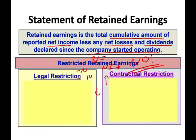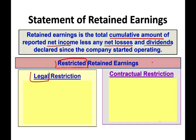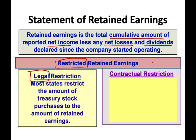Retained earnings could also be restricted. What does it mean for retained earnings to be restricted? It means the company earned the money, but somehow it's restricted, and it could be restricted for two reasons. Either a legal reason — most states restrict the amount of treasury stock purchases to the amount of retained earnings, so you cannot buy back treasury stock in excess of your retained earnings. Treasury stock, or stock buyback, is an important and current topic.